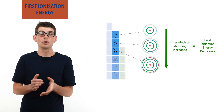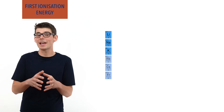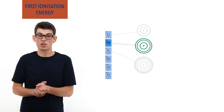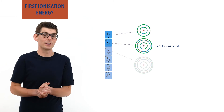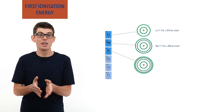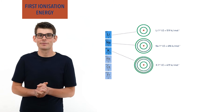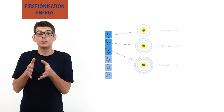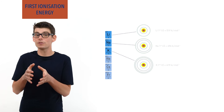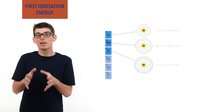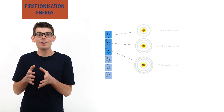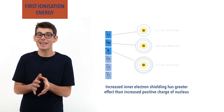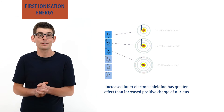For example, down group 1 with the alkali metals, as atoms get larger their first ionization energies decrease: sodium has a lower first ionization energy (496 kJ/mol) than lithium (519 kJ/mol), and potassium (419 kJ/mol) is lower than both. It is important to note that the positive charge of the nucleus also increases down a group, which does cause greater attraction. However, the increased level of inner electron shielding has a bigger effect, meaning the increased positive charge of the nucleus is offset by the increased distance the outer electrons are from it.